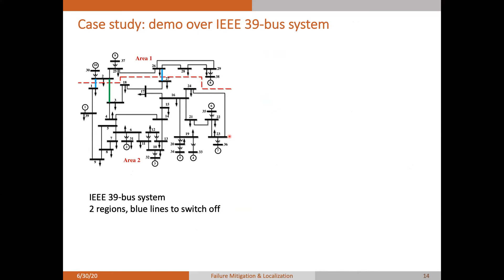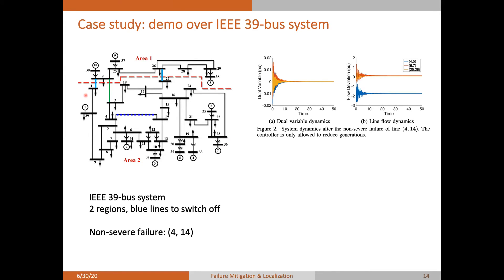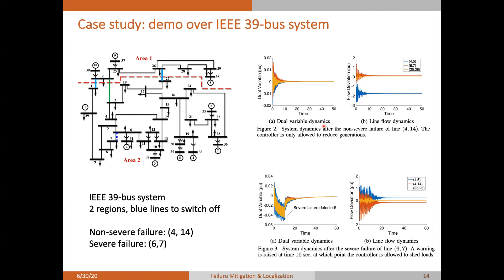Now, we will show an illustrative demo for the dynamic response of our approach. Here, we use the IEEE 39 bus system. We classify the nodes into two areas. And we switch off the blue lines to create a tree structure for these two areas. For non-severe failures, we can show the system evolves following the dynamic equation that we described earlier. And the system quickly converges to a safe equilibrium with line flows only changed in one region, that are where the failure happens. For non-severe failure, we see that the system can quickly detect the infeasibility. And then, a relaxation procedure is implemented, and we can finally stop the failure by allowing more load shedding.